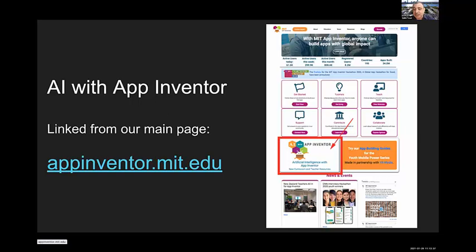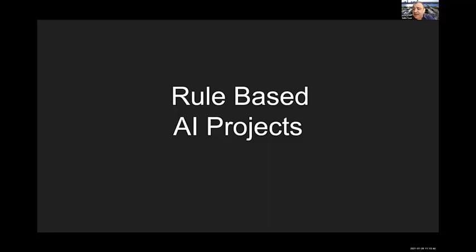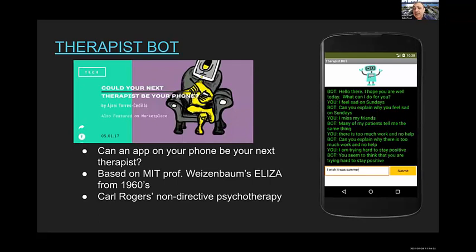Our tutorials and projects are roughly categorized into two groups. The first is rule-based AI projects — you can also think of these as classical AI projects. The second group is machine learning-based AI projects. For rule-based AI, the first project is called the Therapist Bot, inspired by our collaborators YR Media, formerly Youth Radio. Their article asked, 'Could Your Next Therapist Be Your Phone?' It's based on MIT Professor Weizenbaum's ELIZA project from the 1960s, using Carl Rogers' Non-Directive Psychotherapy.